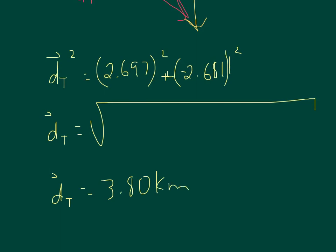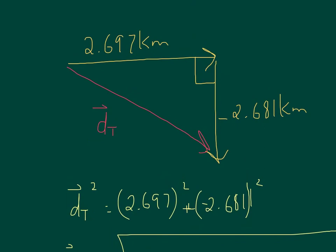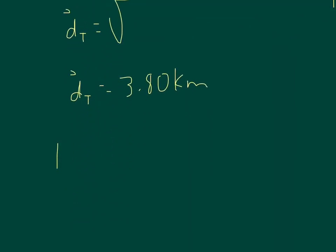Now this is a vector. So we will have to solve for the angle right here. So I'm solving for this angle. This is opposite, this is adjacent. I'm going to use the tan. Don't have to worry about the negative sign and this is out in front. So I want to solve for the angle. Tan theta equals 2.681 over 2.697. Theta is 44.8 degrees.